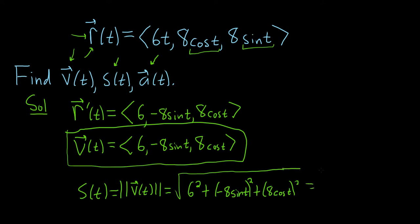All right, let's keep going. This is equal to 36 plus squaring the 8. It's going to give us 64 sine squared t. And then 64 cosine squared t.